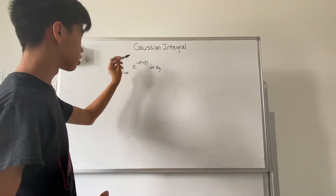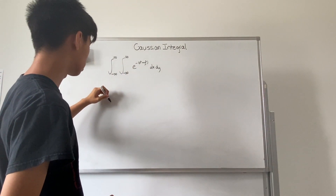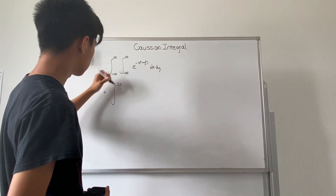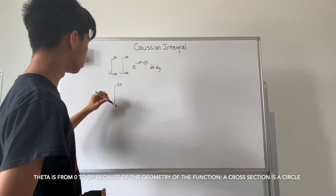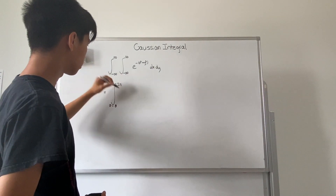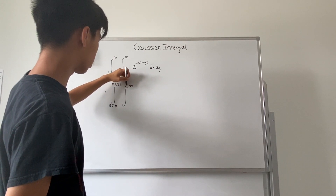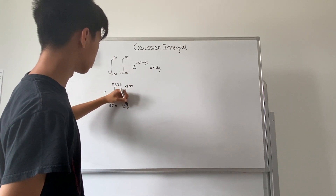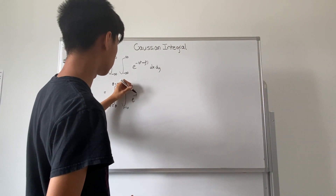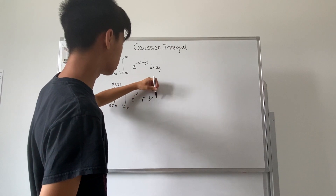Now that we have something that looks like this, we can convert this into polar coordinates. So we have from zero to two pi for theta as our outer integral, and r equals zero to r equals infinity as our inner integral. Then we'll have e to the negative r squared power times r dr d theta.